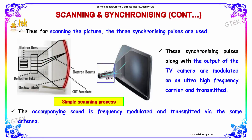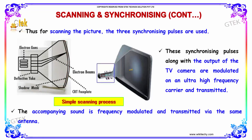For scanning the picture, three synchronizing pulses are used. The synchronizing pulses along with the output of the TV camera are modulated on an ultra-high frequency carrier and transmitted. The accompanying sound is frequency modulated and transmitted via the same antenna.